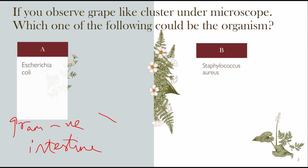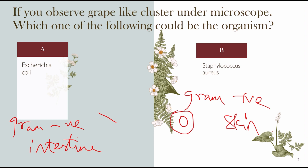Staphylococcus aureus is gram-positive and these microorganisms are spherical, round-shaped bacteria frequently found on the skin as skin flora. The round, spherical bacteria typically present in a cluster form — a grape-like structure when observed under the microscope. So Option B, Staphylococcus aureus, is the correct answer.